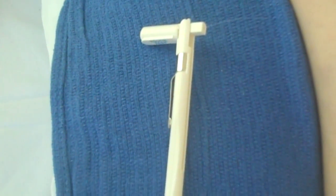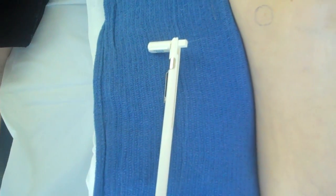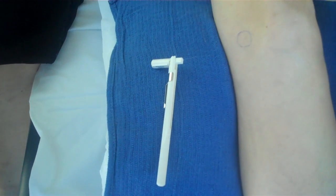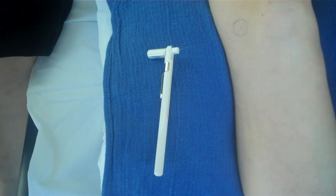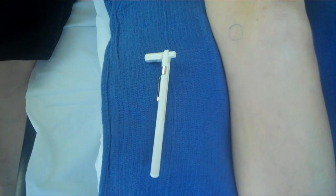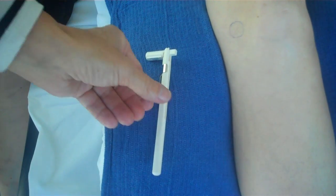Another assessment of hypoesthesia that's commonly used for chronic pain is the assessment of mechanical detection threshold. One way of looking at this is using a series of monofilaments.